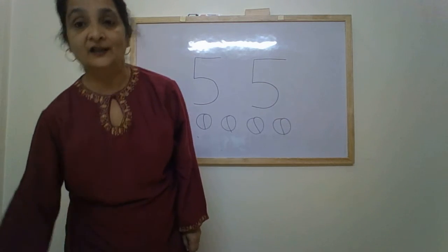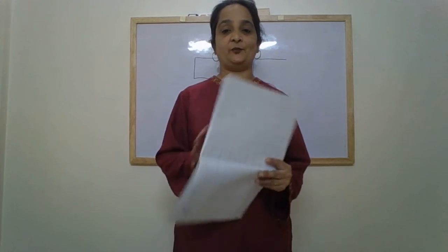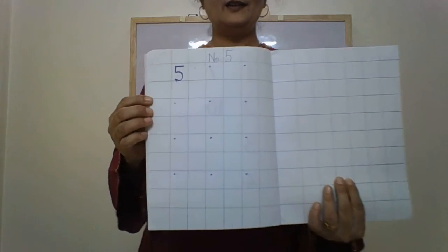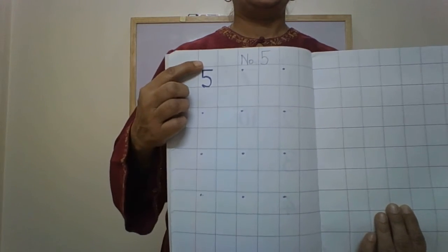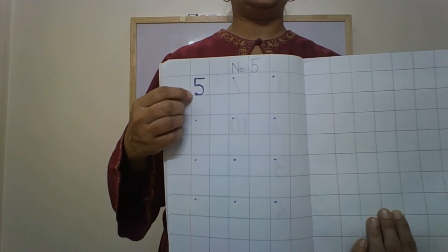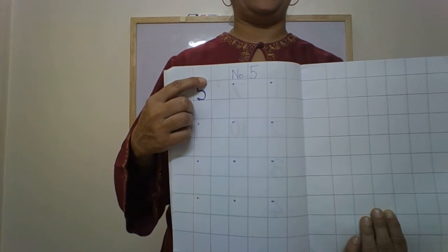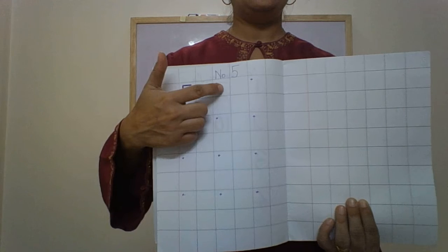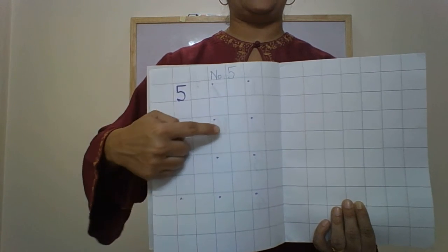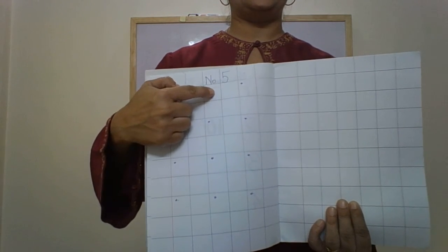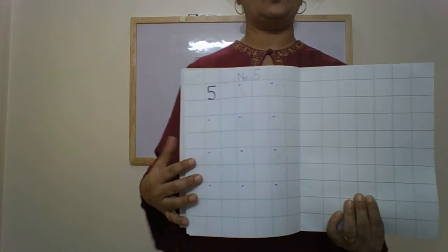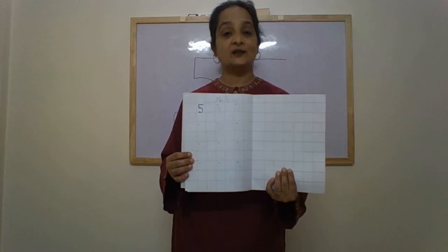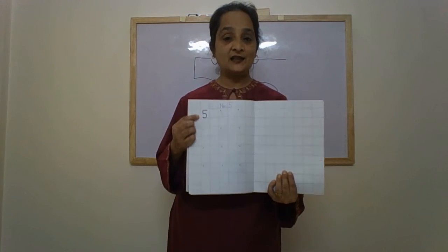Now, after learning number 5, we will practice it in your notebook. Standing line, forward curve and a sleeping line. Write it in alternate squares. Yes, no, yes, no, yes. Alright, write it in alternate squares. Write number 5.